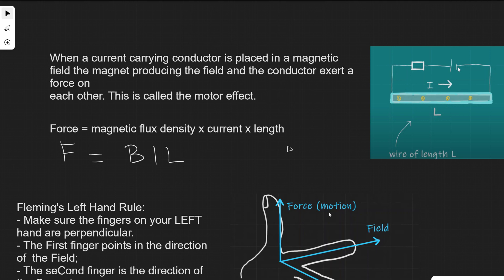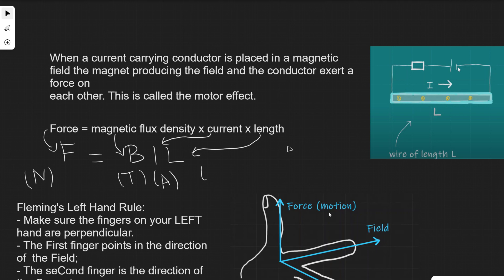In symbols: F = BIL. F is the force, measured in Newtons (N). Magnetic flux density B is the equivalent of magnetic field strength, measured in Tesla (T). I is the current, measured in Amps (A), and L is the length of the wire, measured in metres (m).